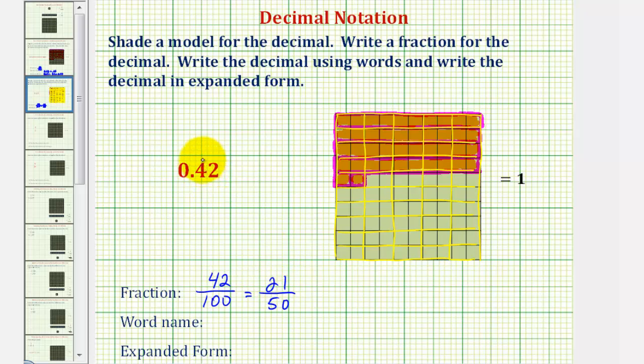Now let's write the word name for our decimal. We've already said this a couple times. We would write this as 42 hundredths, which would be 40 hyphen 2 hundredths. Notice how the THS on the end for hundredths, not hundreds. If we said 42 hundred, that would be equivalent to 4,200.